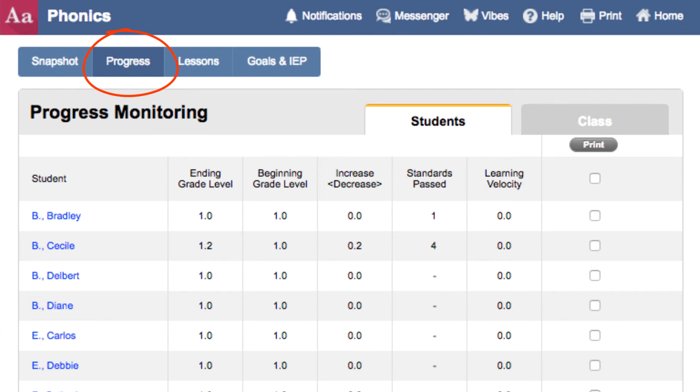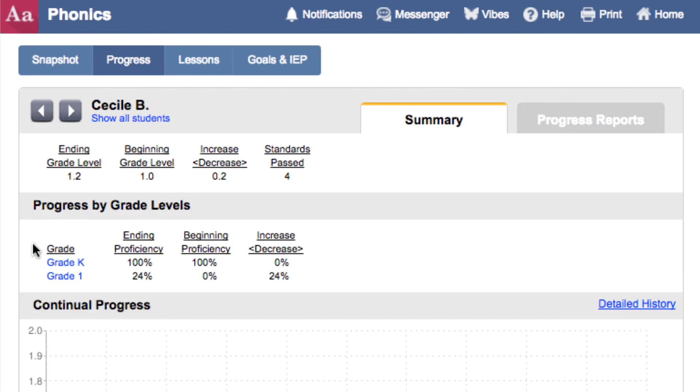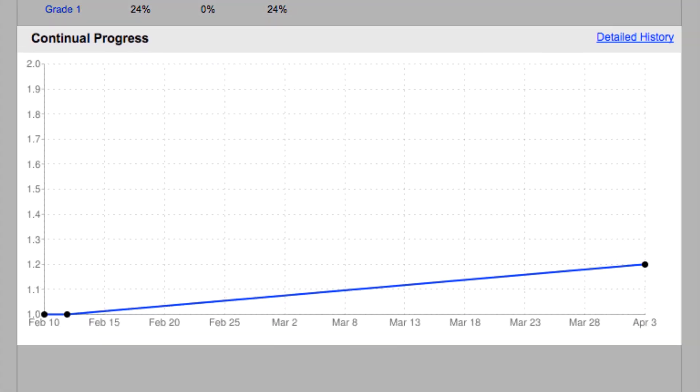And from the progress screen, you can see students' beginning and ending grade level. And if you click on a student's name, you can get even more detailed information on how students are progressing and see a chart that gives you a great visual of the student's progress.